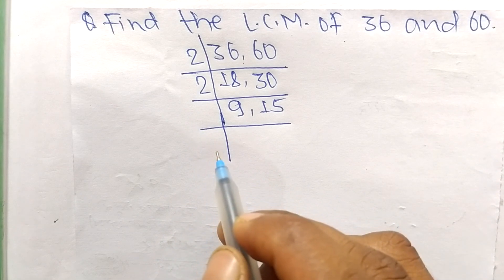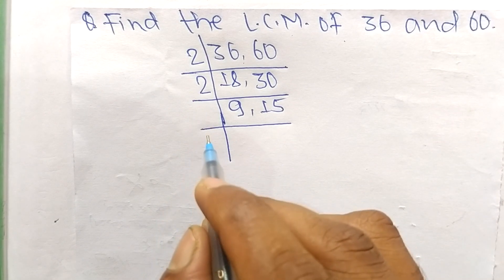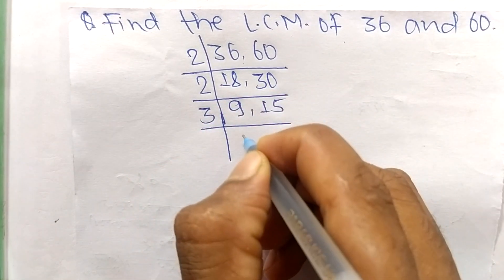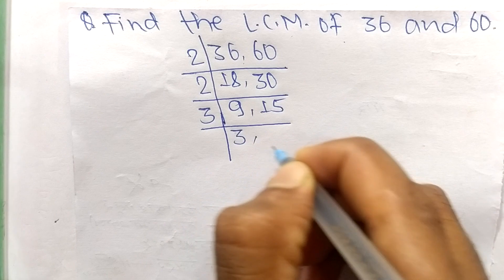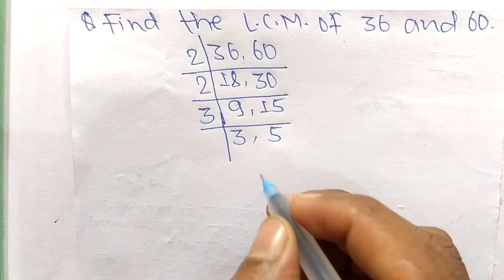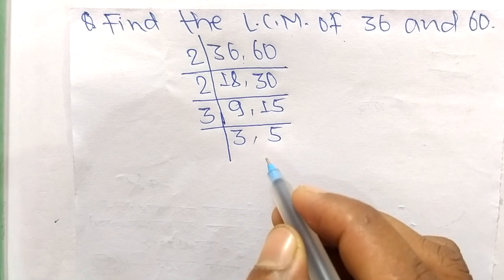We choose the number greater than 2 that can exactly divide 9 and 15, so the number is 3. 3 times 3 means 9 and 3 times 5 means 15. At last we have 3 and 5 which are not exactly divisible by the same number.